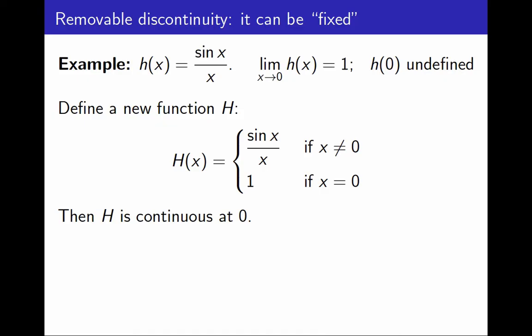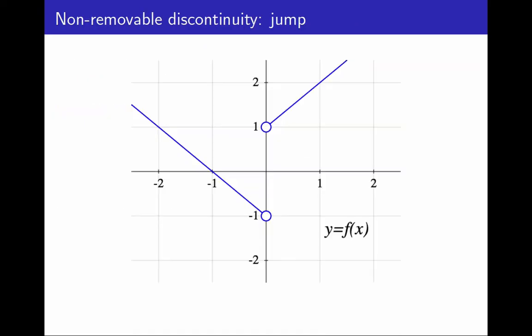By contrast, let's look at some examples of non-removable discontinuities. This function does not have a limit at 0 because it has a jump. It is a non-removable discontinuity. Try as we may, we cannot fix this function. We cannot make it continuous by redefining it at 0.